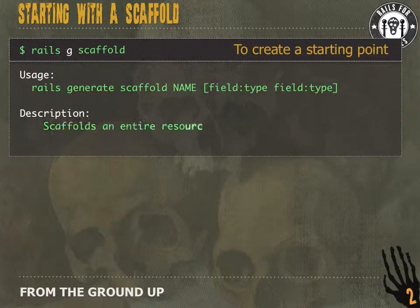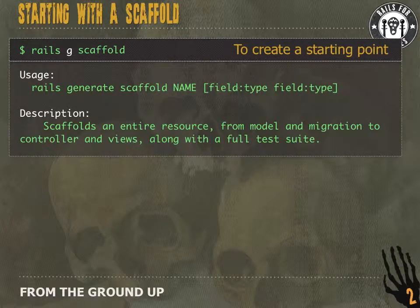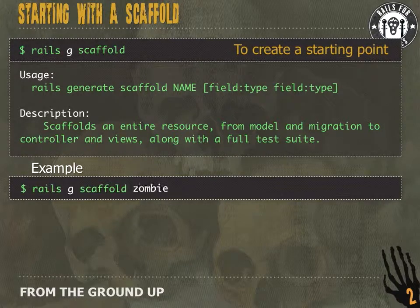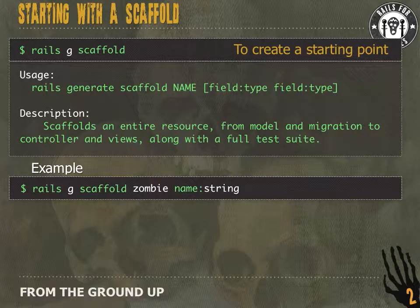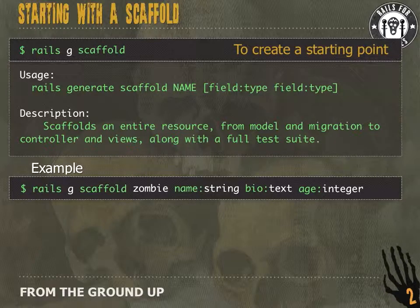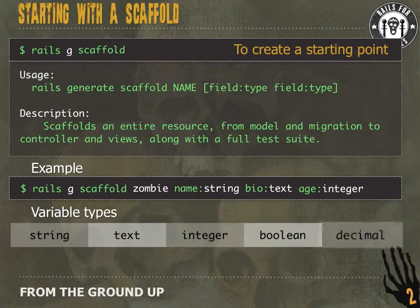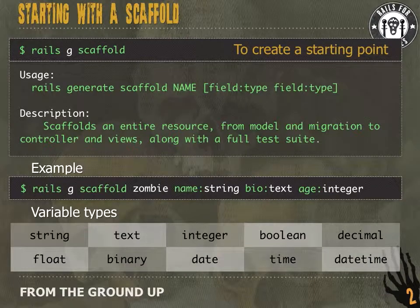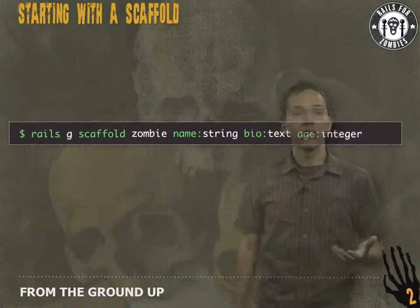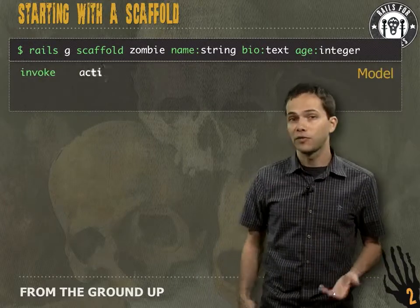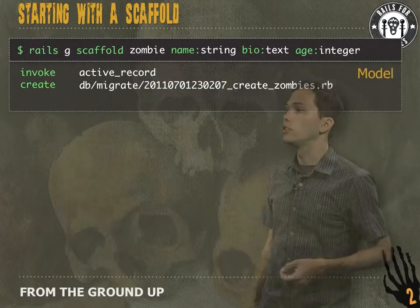Here's the syntax. We're going to run `rails g scaffold zombie`, because we want to create zombies. We'll give it a name, which is a string; a bio, which is a text type; and an age, which is an integer. These refer to database types. Here's a list of all the other database types which we might find useful. When we generate a scaffold, it's going to create a bunch of files for us — let's take a look at a few.